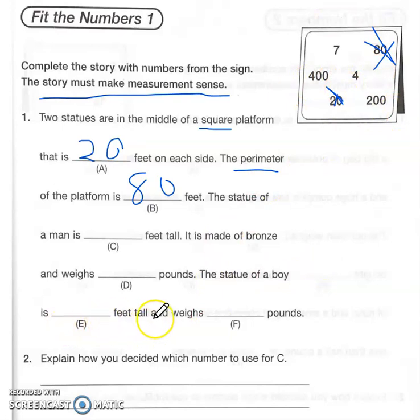Oh, the statue of a man and the statue of a boy! Okay, so the statue of a man is blank feet tall and it's made out of bronze, so I don't think that it's going to be 200 or 400 feet tall. It's got to be seven or four. And if one's a man and the other one's a boy, I think the man has got to be seven feet tall.